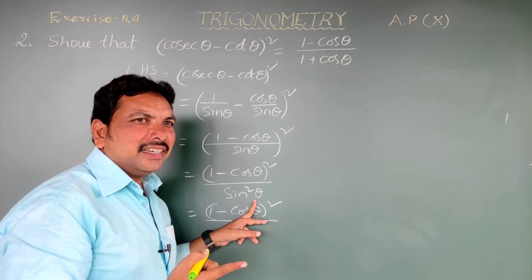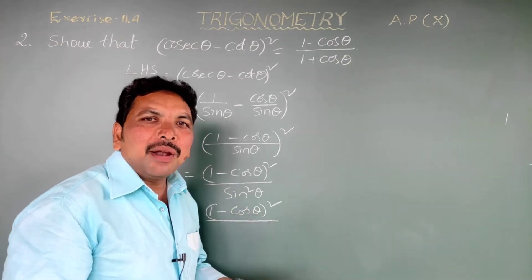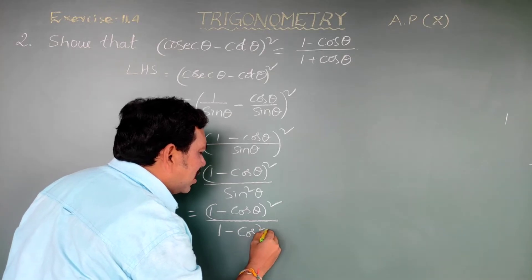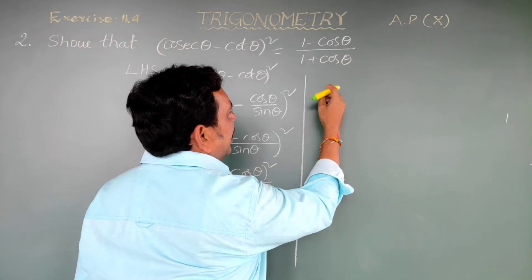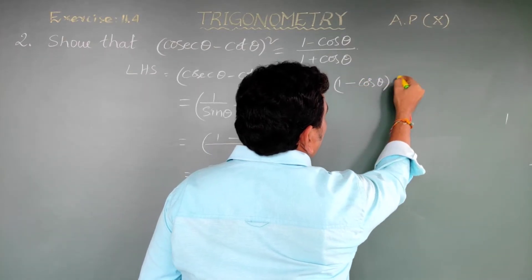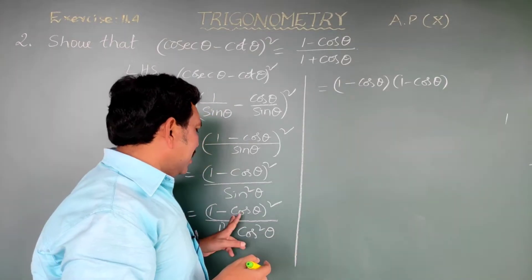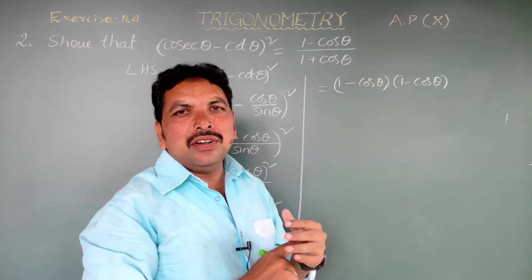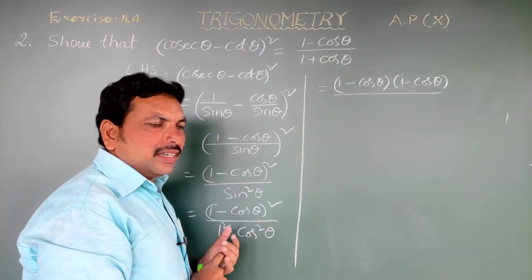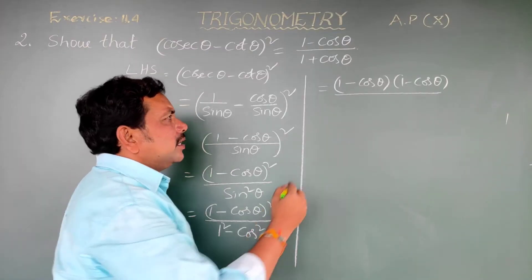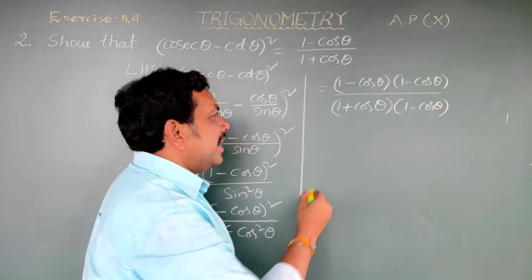We know sin²theta plus cos²theta equals 1, so sin²theta equals 1 minus cos²theta. Substituting: (1 - cos theta)² divided by (1 - cos²theta). Now, 1 minus cos²theta is (1 + cos theta)(1 - cos theta), by the a² - b² identity.